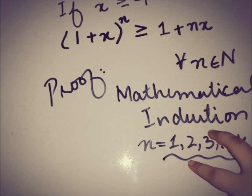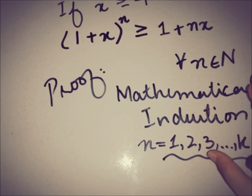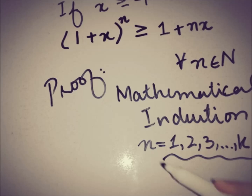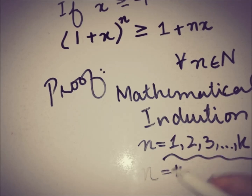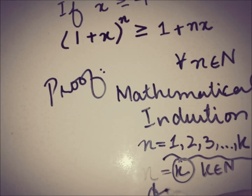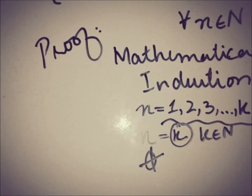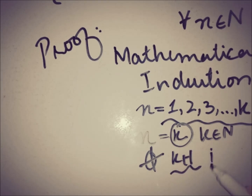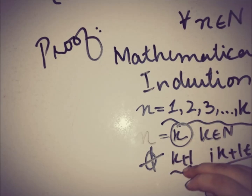By this concept, if we know that this inequality is true for some value of n, then the target is to prove it for the next general value, which also belongs to the natural numbers. So the target is to show that it is true for k plus 1.